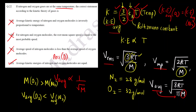You can remember all these formulas for V_RMS, most probable velocity, and average velocity. Sometimes they will give you the Boltzmann distribution plot and ask you which is which, so that graph is also very important to remember. I hope you have understood the solution. Thank you.